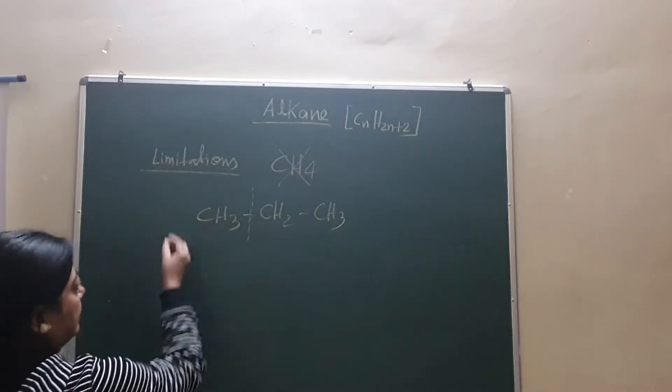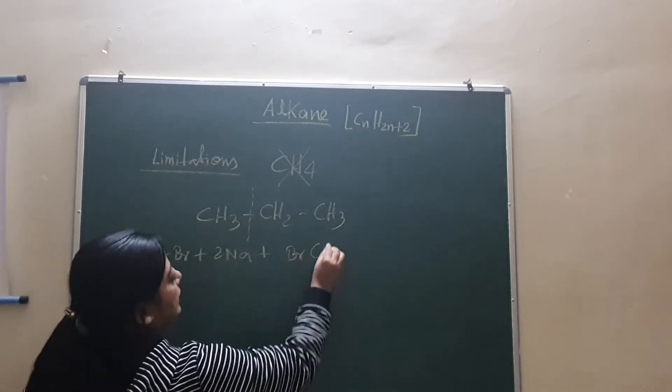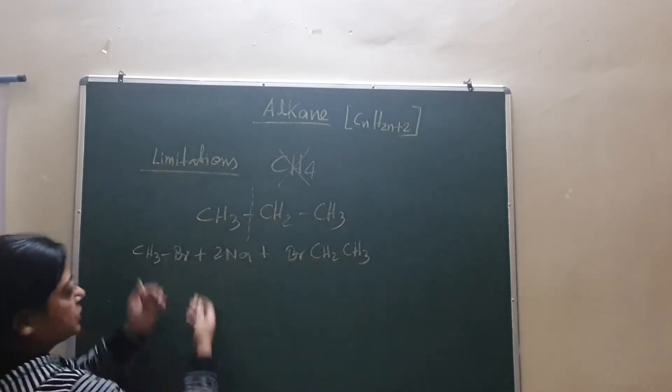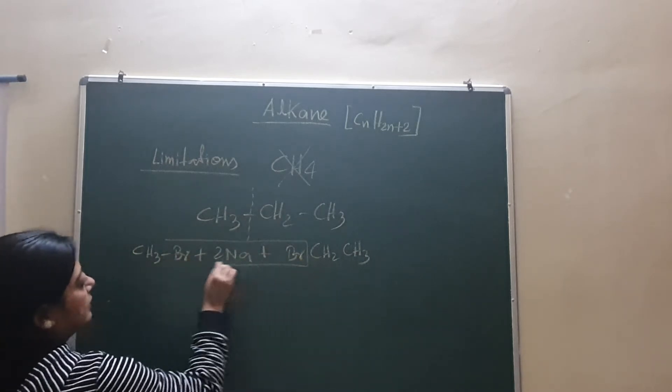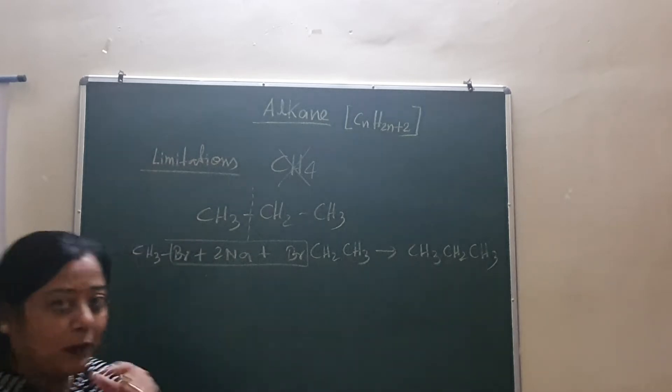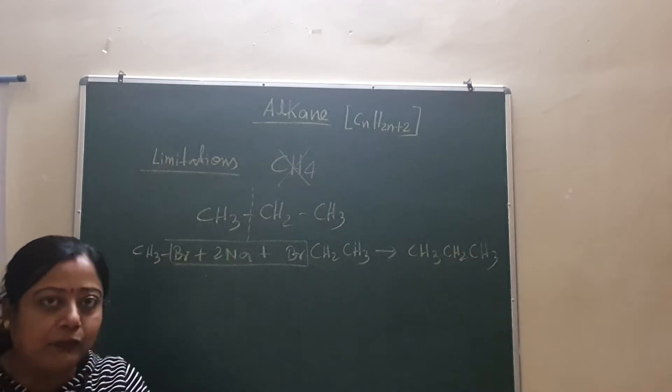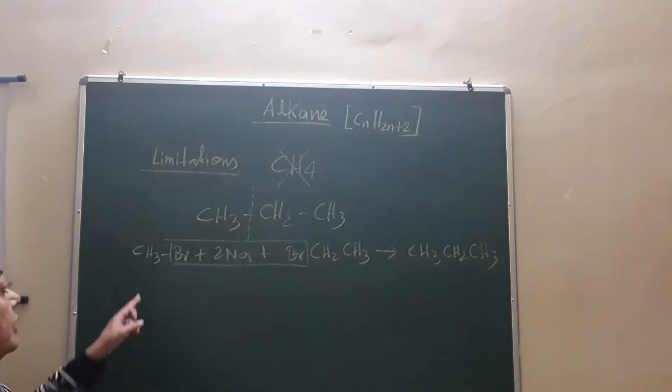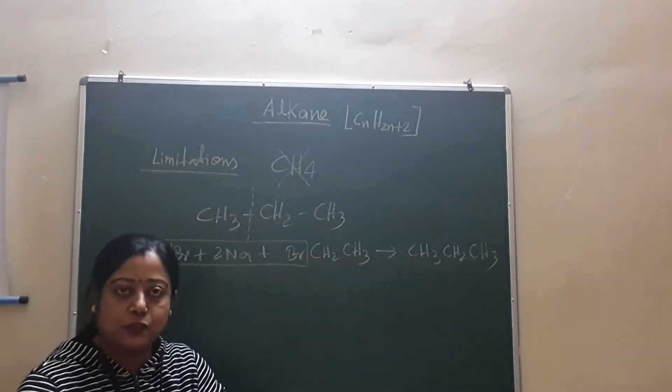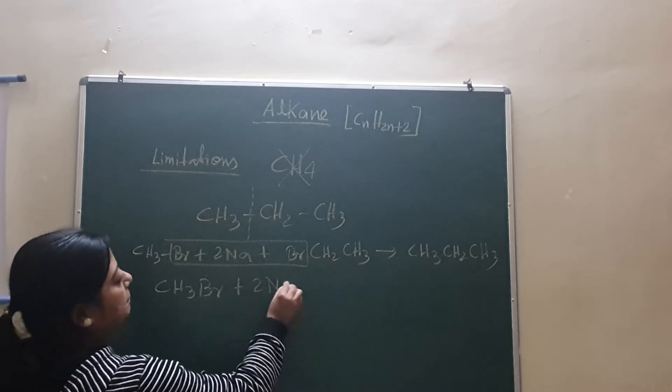How can you prepare this compound by the Wurtz reaction? Suppose we break the compound in the middle. My starting material is CH3Br plus 2 sodium plus Br-CH2-CH3, that is ethyl bromide and methyl bromide with sodium in between in dry ether medium. If we use this, we have prepared this compound properly. So where is the problem?